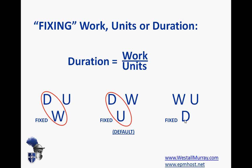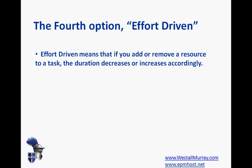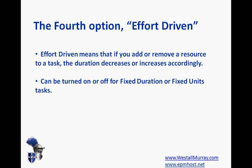The third option is to fix the duration. If duration is fixed and we change units, then work is going to change. If duration is fixed and we change work, then units are going to change. If we override and force the duration to change, it's going to be work that changes. The fourth option — effort-driven — simply means that if we add or remove a resource to a task, the duration decreases or increases accordingly. We can turn that on or off for fixed duration or fixed unit tasks, but in the case of fixed work, we cannot turn it off — because effort-driven is essentially like fixed work; the two are very closely related. And remember that by default, all tasks are fixed units and effort-driven.